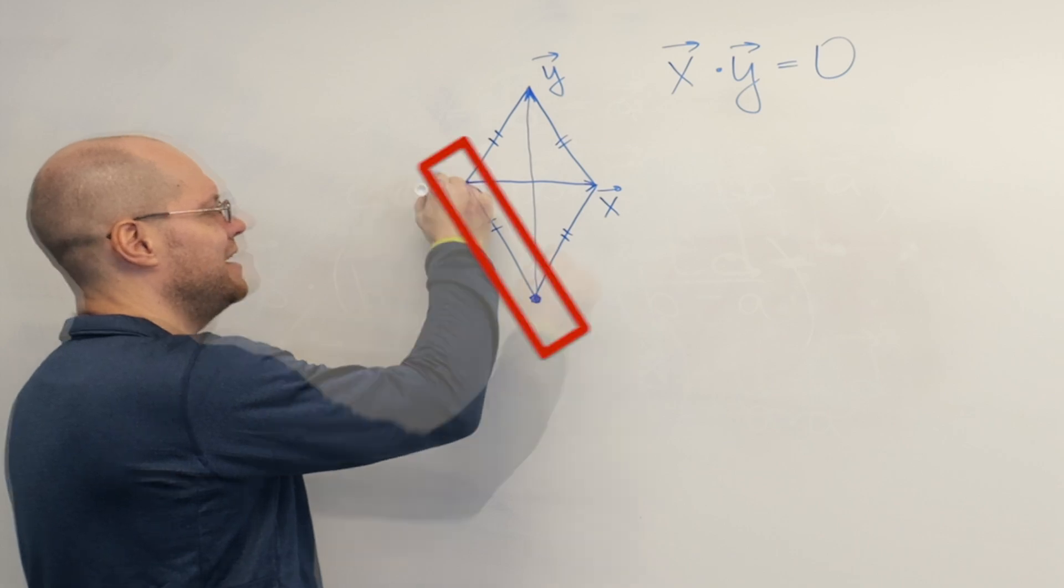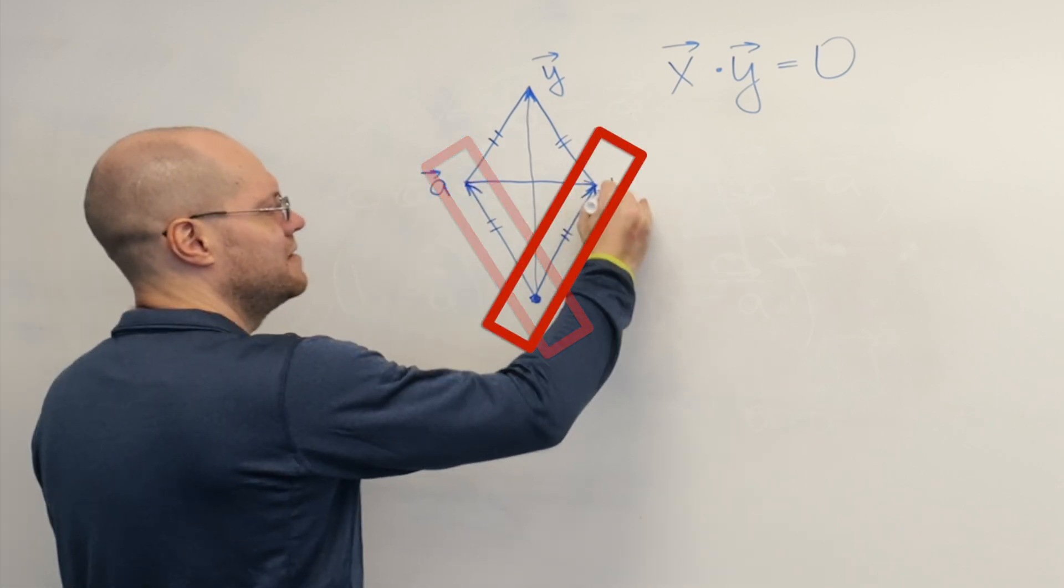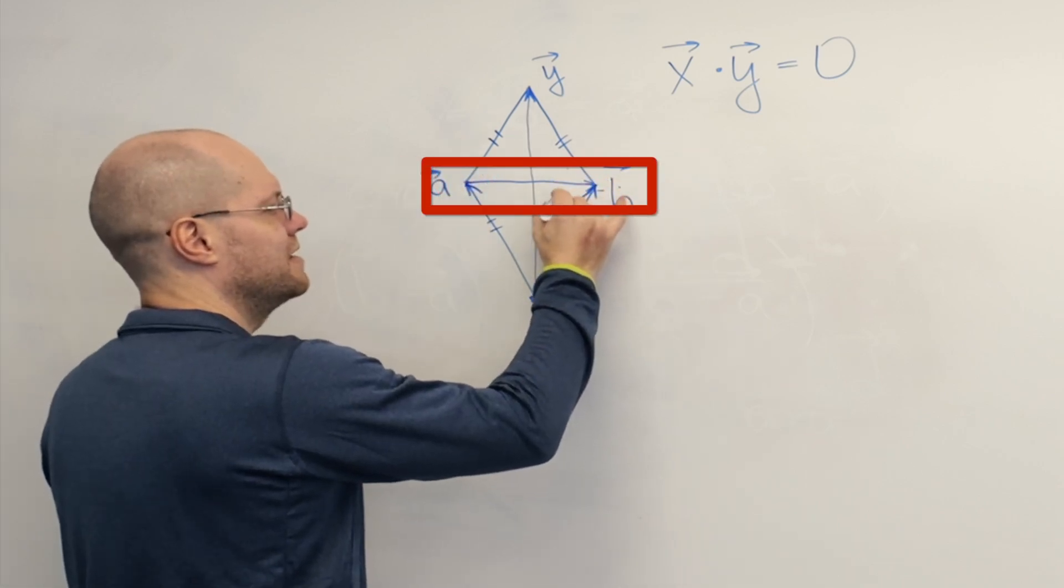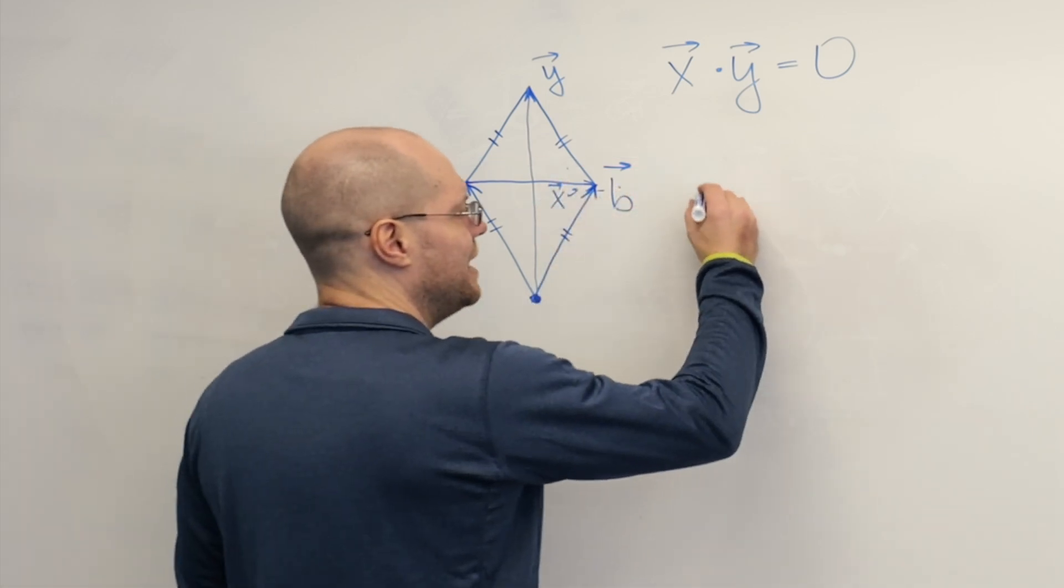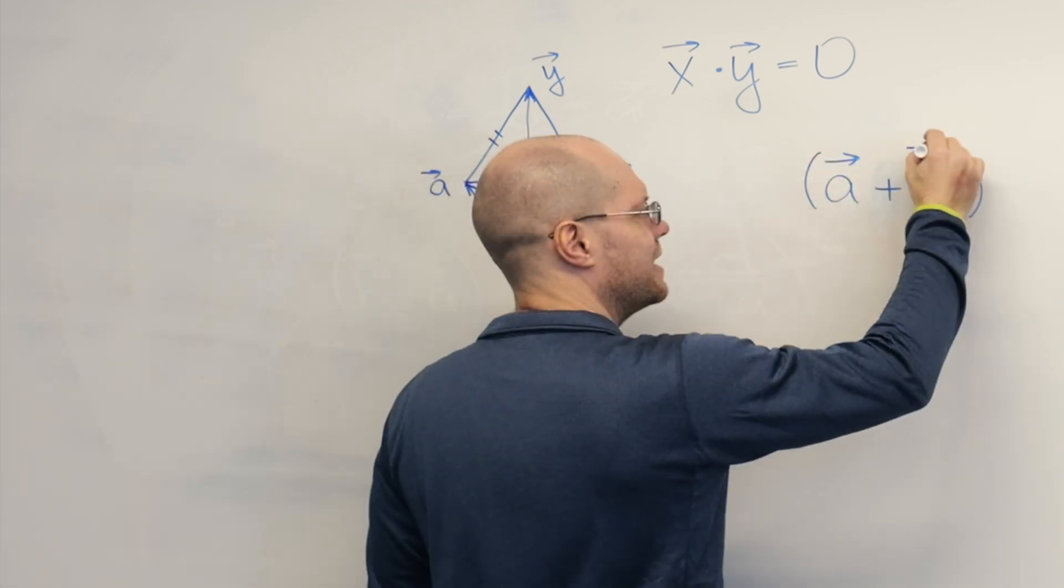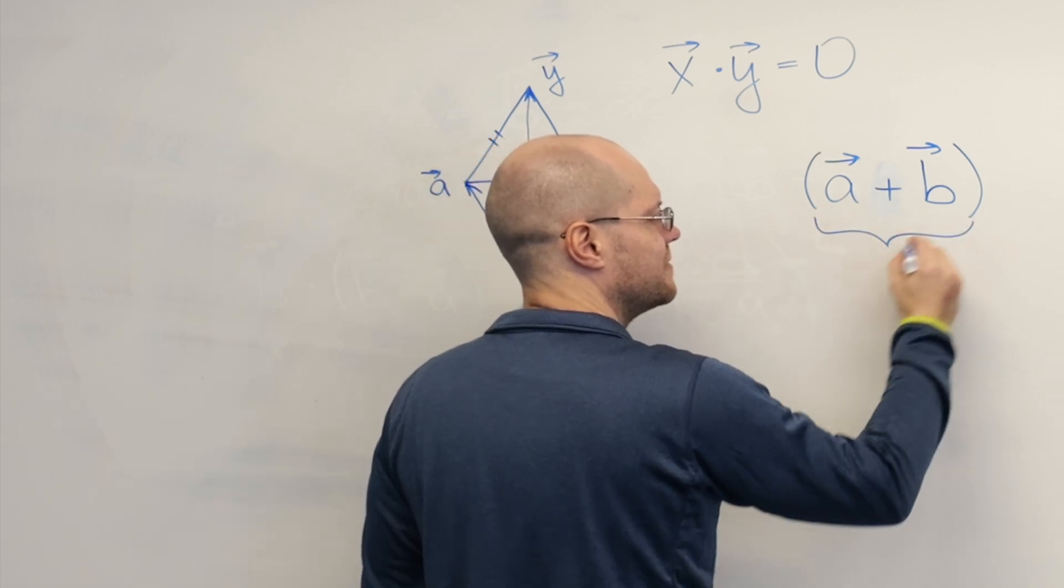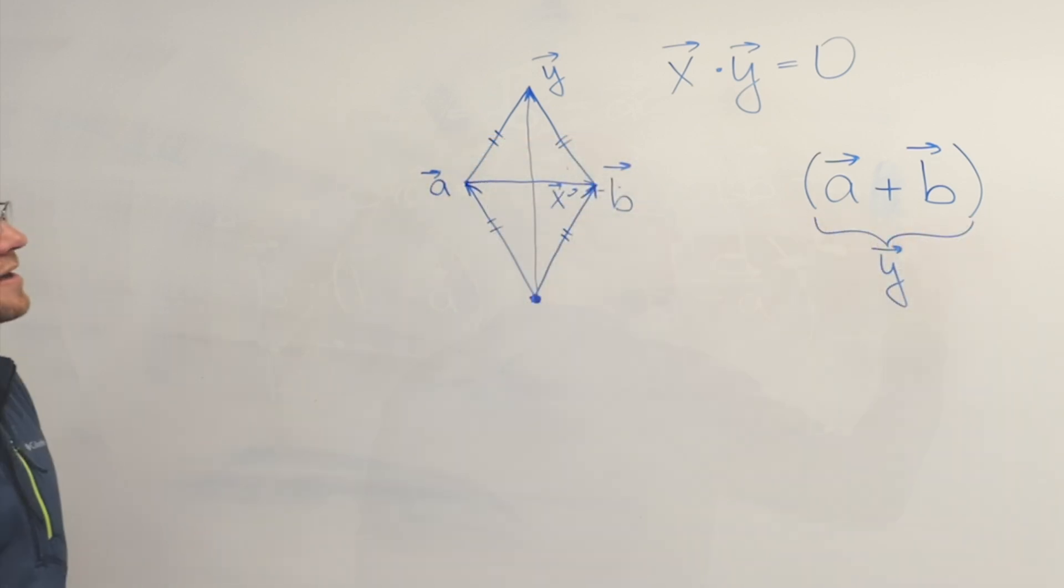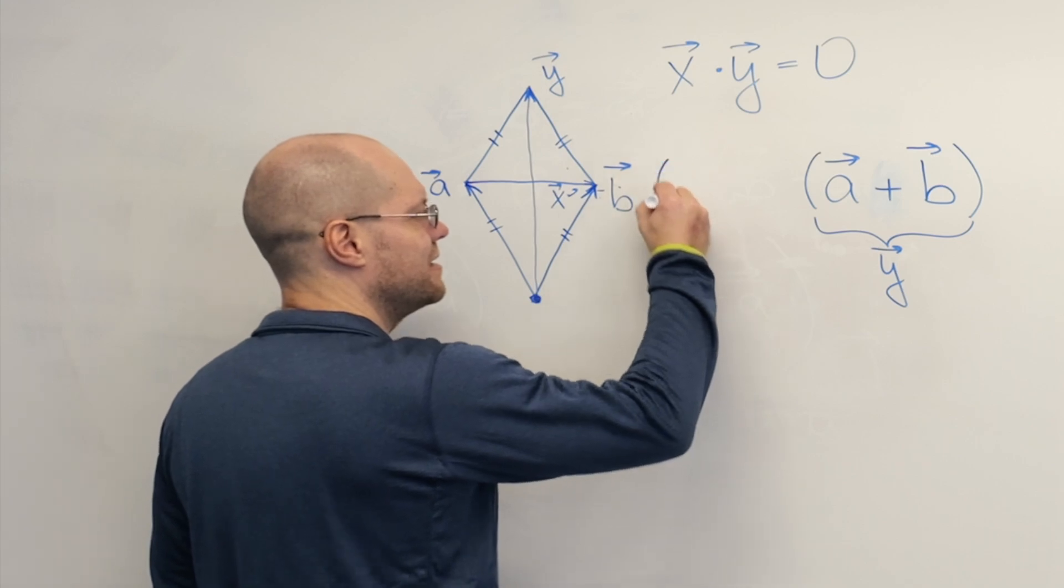Agreed. You're going to call this a, and the other one is b, and then this one will be x. So y would be a plus b. That's y. I agree. And x would be b minus a. Agreed.